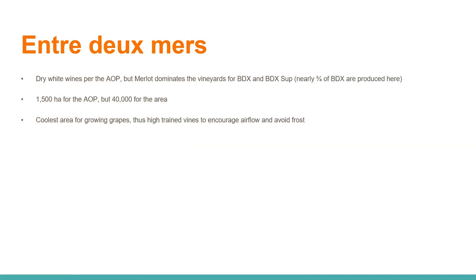Entre-Deux-Mers is always important to discuss because of its size. Per the AOP it's dry white wines, but Merlot really dominates the vineyards and goes into those Bordeaux and Bordeaux Supérieur wines — nearly three-quarters of them are produced here. It has 1,500 hectares for the AOP but 40,000 hectares in the area. It's the coolest area for growing grapes, and you'll find high-trained vines to encourage airflow and avoid frost.